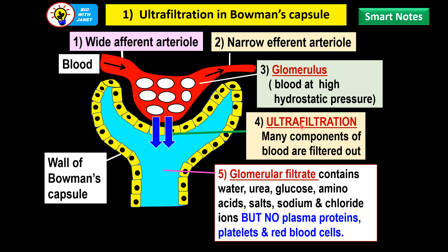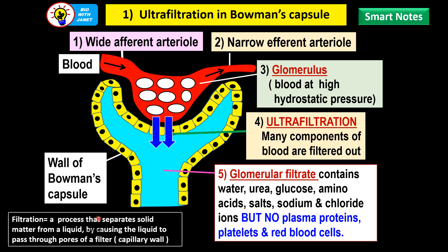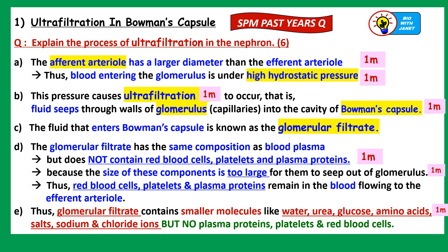We call it ultrafiltration because this filtration occurs at a microscopic level in these tiny structures. Filtration is a process that separates solid matter from a liquid by causing the liquid to pass through the pores of a filter — it separates the larger particles from the smaller particles. The walls of the blood capillaries or glomerulus act like a sieve or filter. No plasma proteins, platelets, or red blood cells are found in the glomerular filtrate because they are too large to pass through the walls of the blood capillaries.